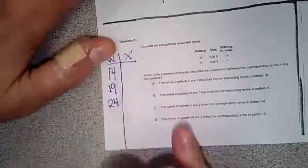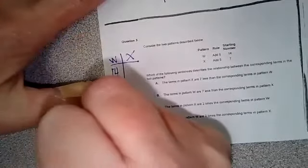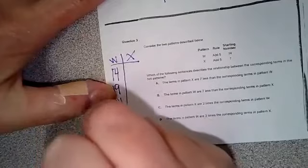So 14 add 5 is 19, 19 add 5 is 24, 24 add 5 is 29, add 5 again is 34.